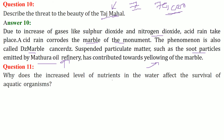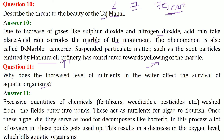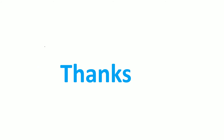Why does an increased level of nutrients in the water affect the survival of aquatic organisms? Aquatic organisms are an important part of the food chain and biodiversity. Excessive quantities of fertilizers, herbicides, and pesticides washed from fields enter ponds, lakes, and rivers. These act as nutrients for algae to flourish. When the algae die, they serve as food for decomposers like bacteria. This process uses up a lot of oxygen in the water, and the decrease in oxygen level kills aquatic organisms.